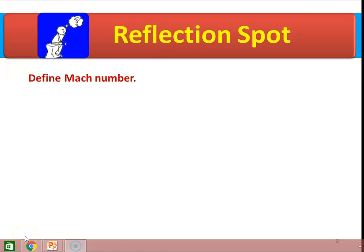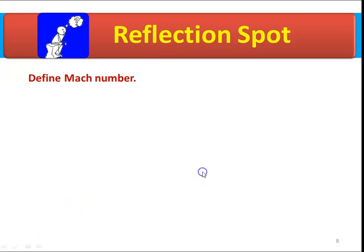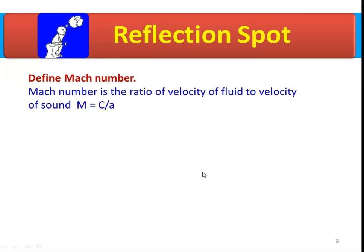Now take a reflection spot. From the earlier discussion, try to define what the Mach number is. If you have written: 'Mach number is the ratio of velocity of the fluid to the velocity of sound, M = C/A,' you are correct.